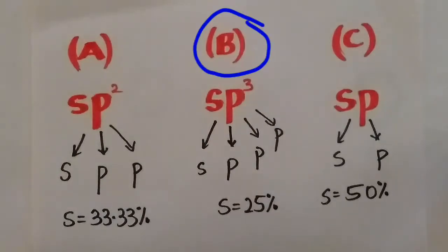In molecule B, the hybridization is SP3. We have one S orbital and three P orbitals. Therefore the percentage of S orbital is 25%.